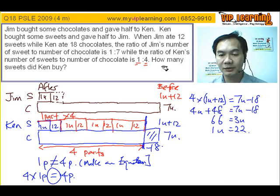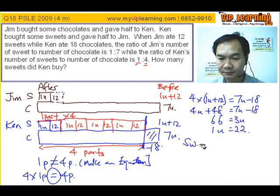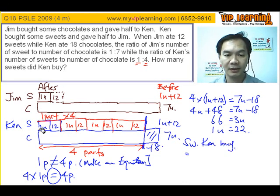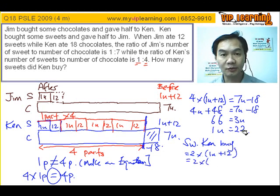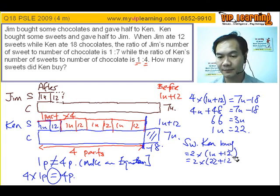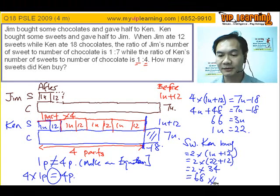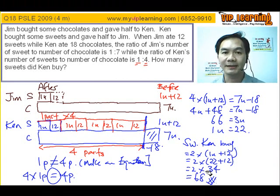What's the key question? How many sweets did Ken buy? So, sweet can buy is actually one part for himself, the other part for his friend. So, it's two times of one u plus twelve. Giving you two times of, we substitute twenty-two inside here. We are going to have two times of thirty-four. Therefore, giving you sixty-eight sweets. That is your beautiful answer.